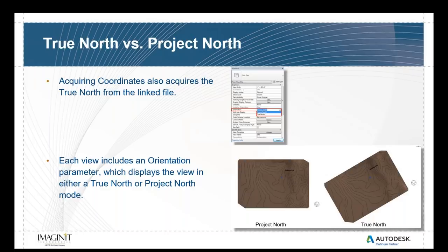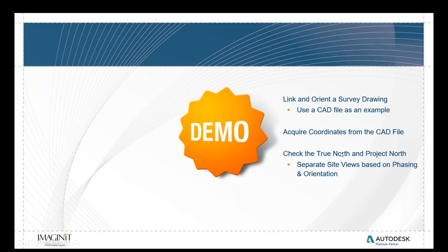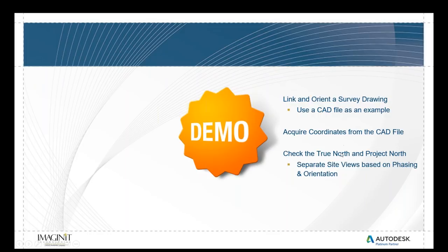Once we've acquired the coordinates, that already sets the true north in our Revit project. In the different views within our Revit project, we can choose whether we want to view our site using the true north or the project north orientation. So let me switch over to Revit and look at how to link in a 3D CAD file received from a civil engineer, how to acquire the coordinates from that CAD file, and then look at the setting to switch from true north to project north orientation in the different views.